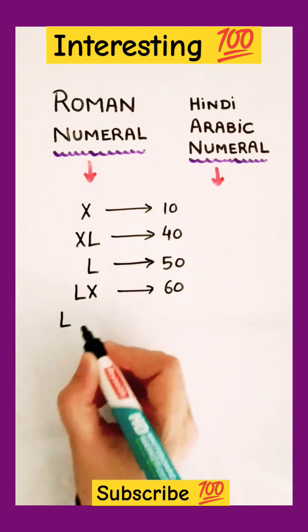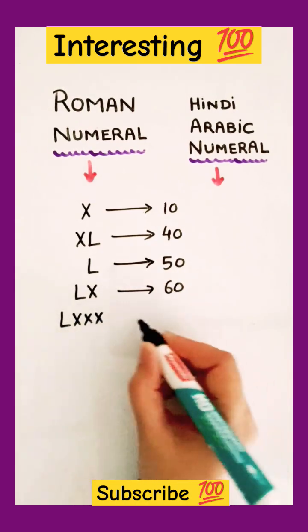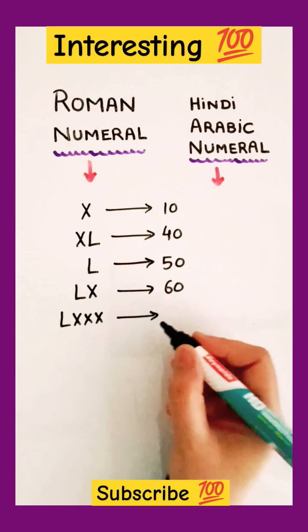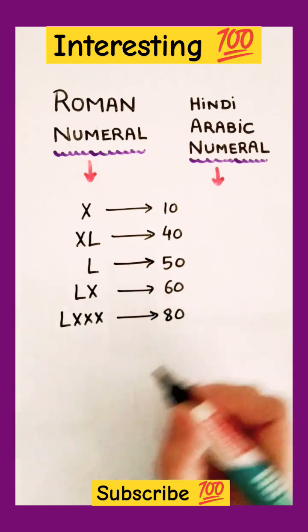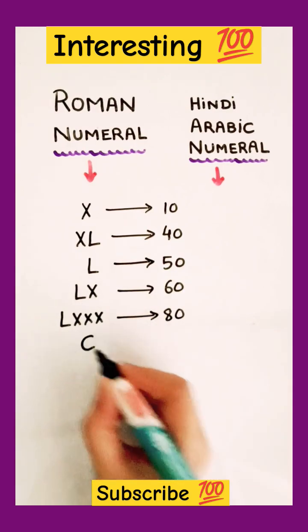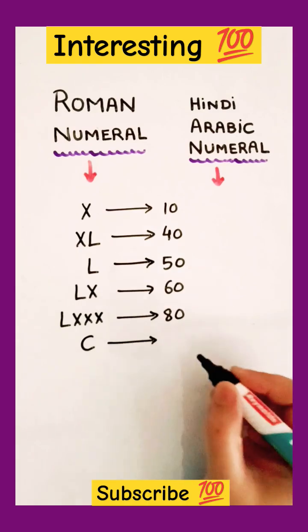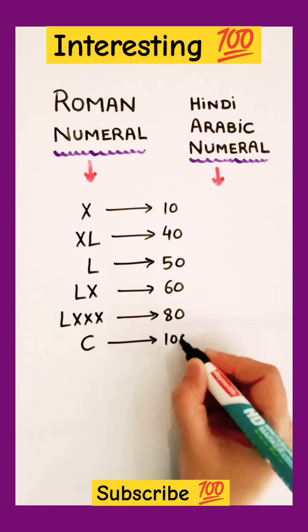And now, the X is coming 3 times along with L. So, it corresponds to 80. And C, capital letter C corresponds to 100.